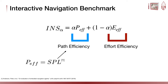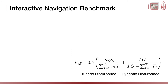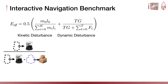Path efficiency compares the shortest path and the path traversed, defined similarly to the novel SPL metric proposed to evaluate robot navigation solutions. Effort efficiency is the average of two terms. The first term, kinetic disturbance, compares the kinetic energy spent to move the robot itself with the kinetic energy spent in total. The second term, dynamic disturbance, is the ratio between the force on the robot due to gravity and all the forces on the robot — gravity and the active force generated by the motor to move and interact.